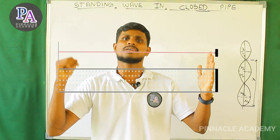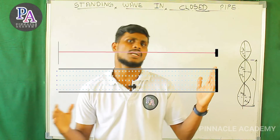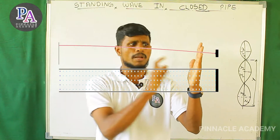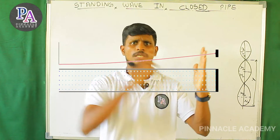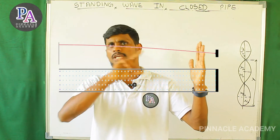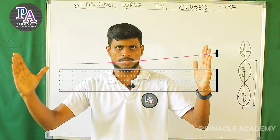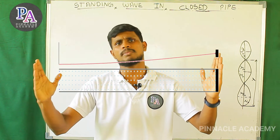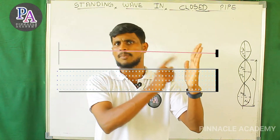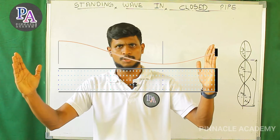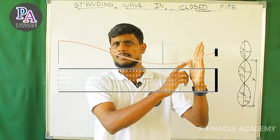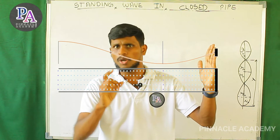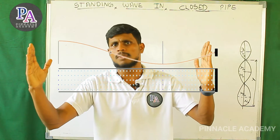Now let's start with the first mode of vibration. The first mode of vibration has an antinode. The second mode of vibration shows one node and one antinode.